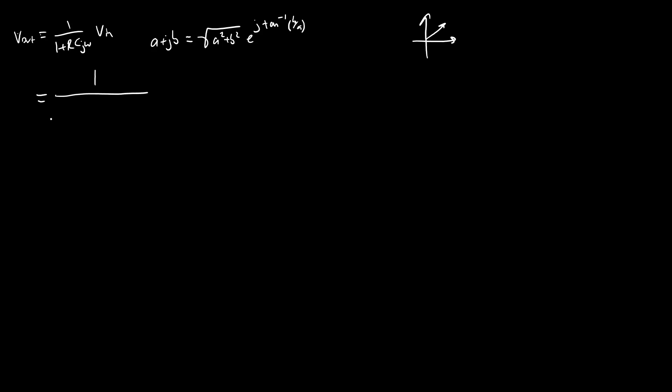So this all becomes this big long thing, which is the square root of 1 plus RC omega squared times e to the j inverse tangent of RC omega times Vin. We are going to flip this term up to the numerator and give it a negative exponent. And that's just remember saying that 1 over x is equal to x to the negative 1.